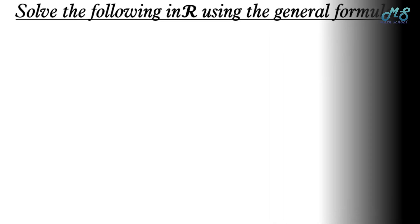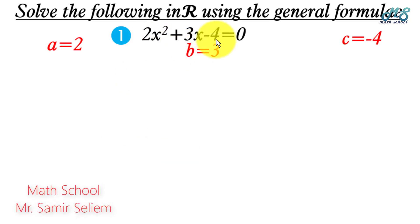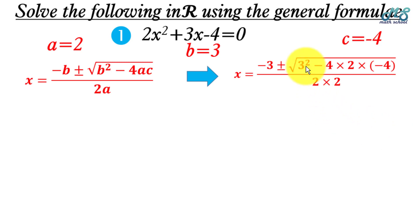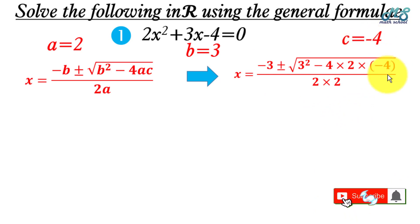Example: solve using the general formula — number one: 2x squared plus 3x minus 4 equals zero. Identify a equals 2, b equals 3, c equals negative 4. Write the rule: x equals negative b plus or minus the square root of b squared minus 4ac over 2a. Substituting: x equals negative 3 plus or minus the square root of 3 squared minus 4 times 2 times negative 4, over 2 times 2.